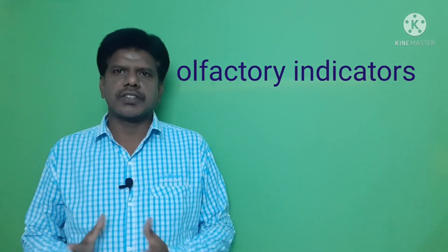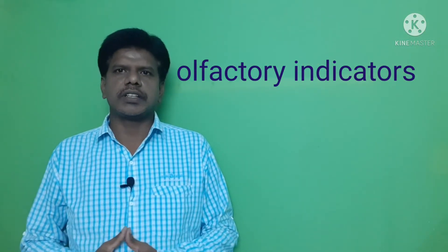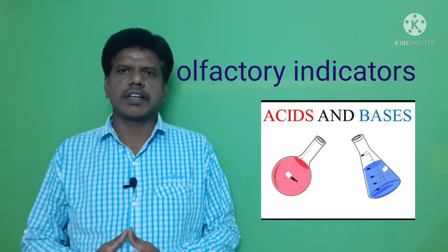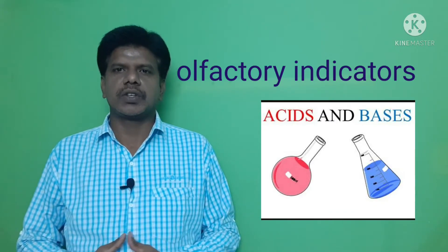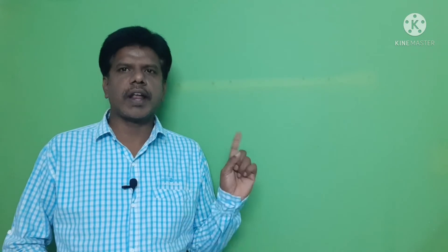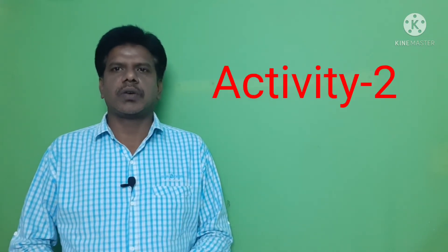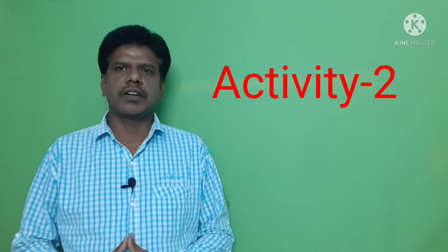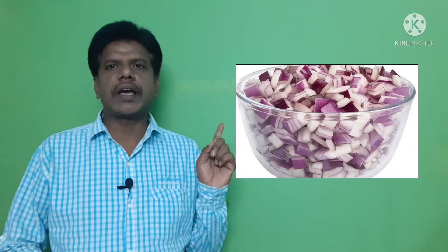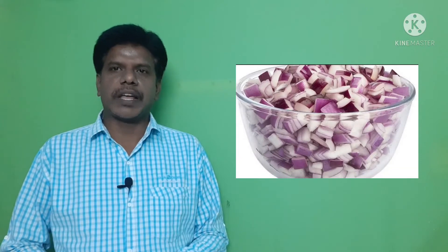Let us do an activity to test the olfactory indicators in acid and basic medium, to see how they will change their odor. For this activity we need a few materials: first, some chopped onions, a plastic bag, and a piece of cloth.